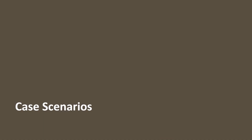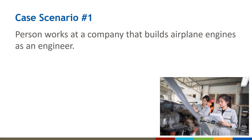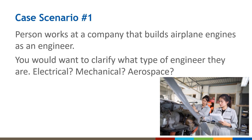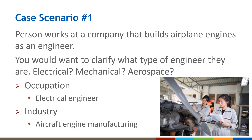Now let's go over case scenarios to help you think about the best documentation of occupation and industry. In the first case, the person says she works at a company that builds airplane engines as an engineer. You may ask, 'What type of engineer are you?' Based on her response, her occupation would be electrical engineer, and her industry is aircraft engine manufacturing. Note that engineer is a bit vague, so it's better to clarify — even with detailed industry information, it's always better to ask.